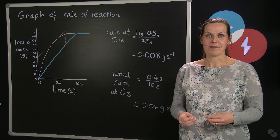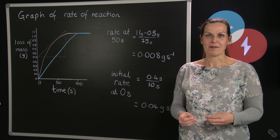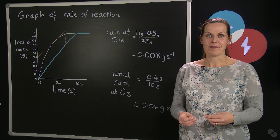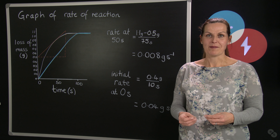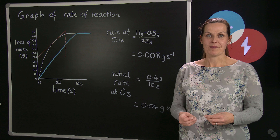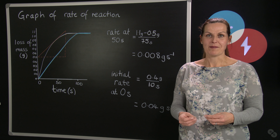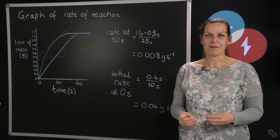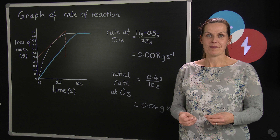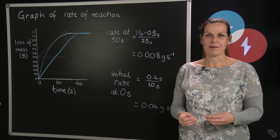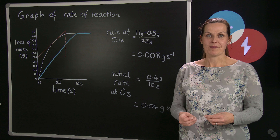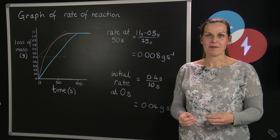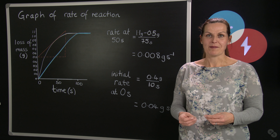Now I'm going to repeat the reaction with a different concentration of acid. Up on the board are the results of the reaction at one mole per decimetre cubed hydrochloric acid, which you saw me do, and I've also done another experiment at two moles per decimetre cubed hydrochloric acid. With the more concentrated acid, the particles of the acid can collide more quickly with the magnesium, producing hydrogen more quickly. At one mole per decimetre cubed the reaction finished at 60 seconds, but for two moles per decimetre cubed it finished at 40 seconds. You can see the reaction's finished because no more gas is being produced.